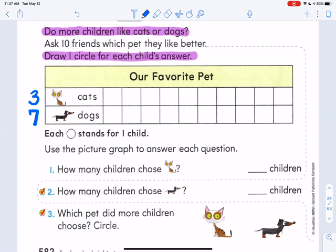Now, we have to draw one circle for each child's answer, but I like to read the title first so I know what I'm doing. So the title says, our favorite pet. And here are the choices, as you probably already have figured out, cats and dogs. And wait, let's read that key. The key says, each circle stands for one child. Okay. Pause the video. See if you can finish making this graph. This picture graph. And then start the video again when you're finished to check your work.